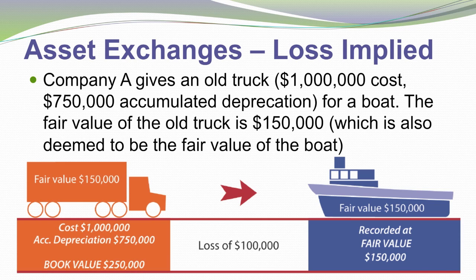The boat has a fair value of $150,000. That also suggests, in theory, that the truck is worth $150,000 — what's given must have a fair value equal to what's received, or one party would have objected. So for the transaction to have occurred, there must be perceived relative equality in fair values. This suggests a loss of $100,000: we're giving up a net book value of $250,000 in exchange for a $150,000 asset.